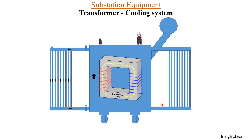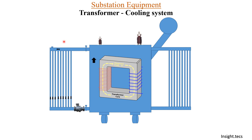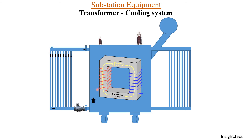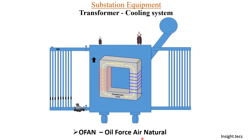One more system we can use is an oil pump. The function of the oil pump is to pump the oil more quickly inside the main tank, so the oil will circulate with more speed. As the circulation increases, cooling increases, and the transformer oil will remain at normal temperature, increasing the efficiency of the transformer. Since we are forcing the oil, this kind of cooling system is called oil force air natural, as the air is rotating naturally.